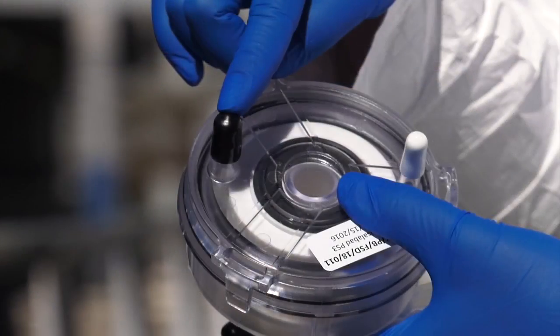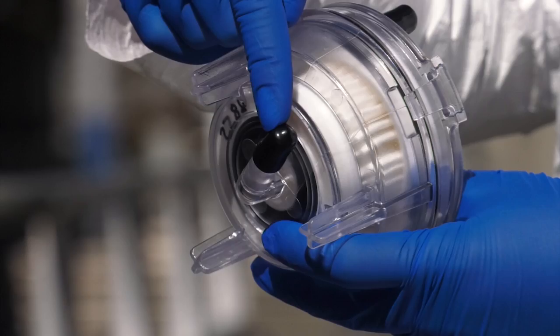The ViroCap filter housing has three ports. The top black port is the inlet, where the sample flows from the collection bag into the filter. The bottom black port is the outlet, where the sample flows from the ViroCap filter housing back to the source water.